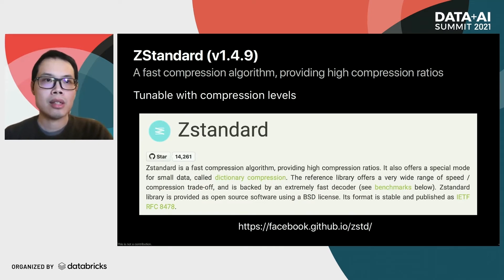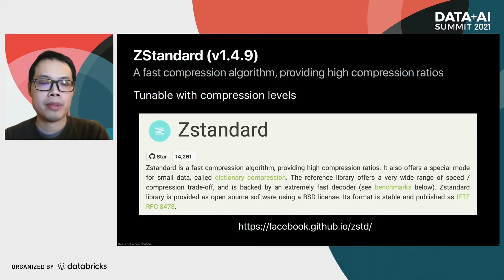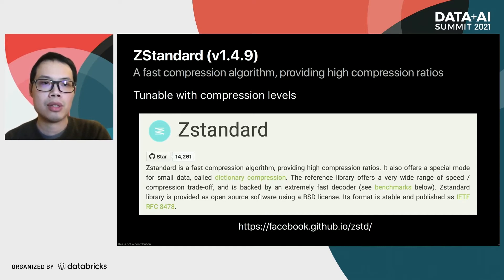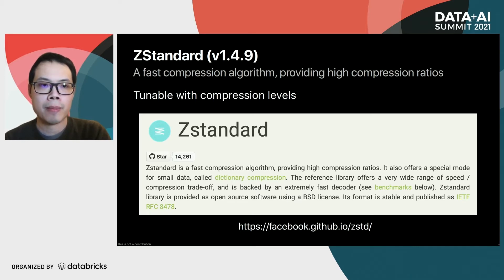So what is Zstandard? Zstandard is a fast compression algorithm providing a high compression ratio. In Spark, we may already be familiar with multiple compression codecs — for example, LZ4, which is used by default as the Shuffle I/O compression, and Snappy, which is the default compression codec in Parquet. These are high-throughput compression codecs focused on speed. We also have codecs like Gzip that focus on compression ratio. Zstandard excels in that it gives you Snappy-like compression speed but also Gzip-like compression ratio. It also offers a very wide range of speed and compression trade-offs by allowing users to set a compression level.